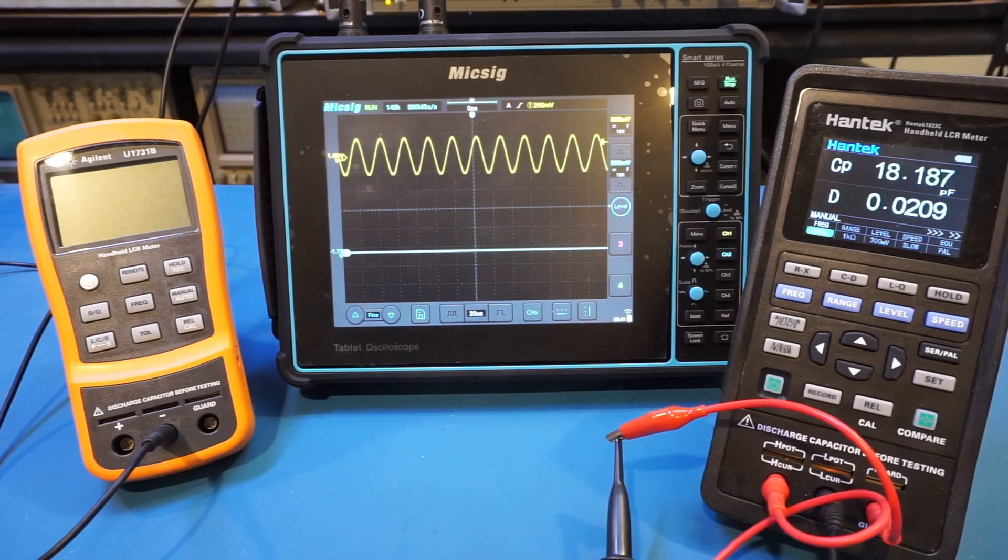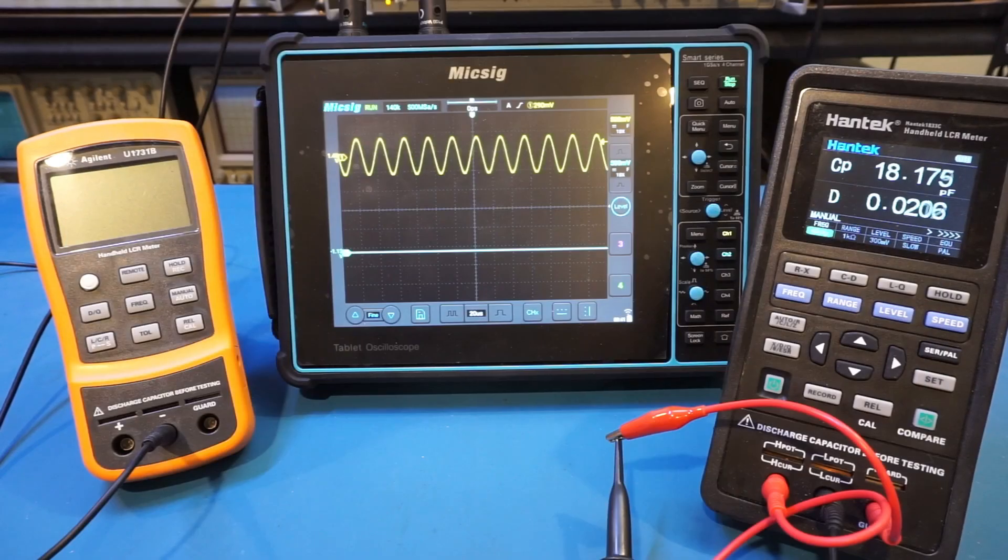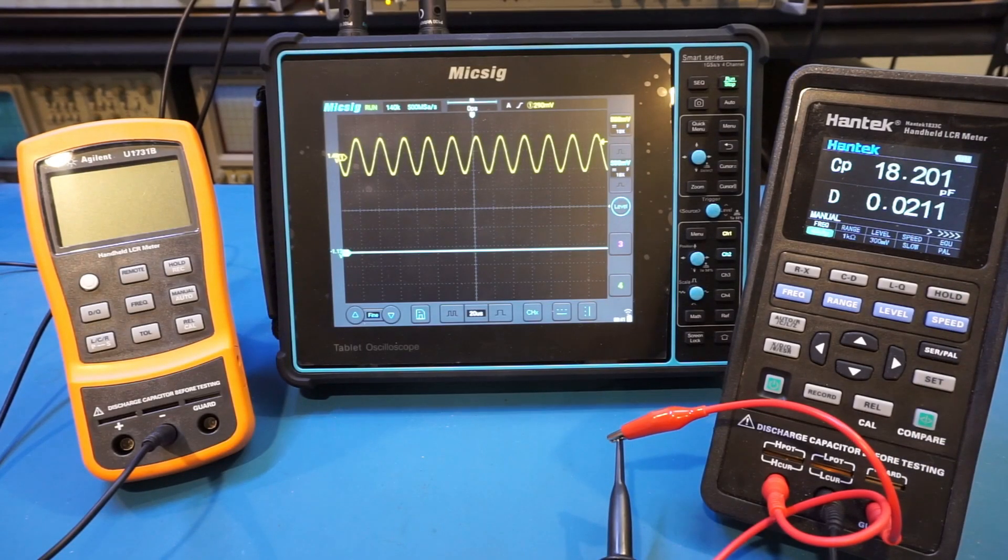To be fair though, when you read through the product manual you will only see the guard terminal mentioned a couple of times without any elaboration on how to use it. So this made me believe that maybe the guard terminal on this 1033c is not activated at all. I noticed this issue shortly after I did my initial review, but I wanted to give Hantek some benefit of doubt and I was hoping Hantek would give me some explanation.